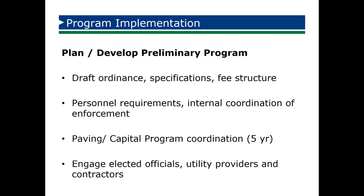Lastly, we're going to talk about the implementation of the program. The more thought that you put into how your program is going to be implemented and what the various components are that need to go into this up front, the easier it could go for you. We talked about having a draft ordinance in place that's going to include your specifications as well as your fee structure. A lot of these are available to you online, and I can certainly help you if you're looking for some examples that we have. Having a working knowledge of what your ordinance structure might be and what you need to include in it up front will really help that part of the process go a lot better — and it'll probably also save you a couple bucks with your solicitor.